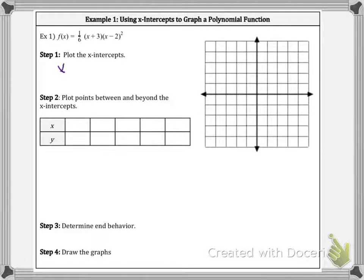We know that x plus 3 equals 0, then we set that equal to 0, x minus 2, set that equal to 0. Therefore, x equals negative 3 and x equals positive 2. So those are our x-intercepts at negative 3 and at positive 2.